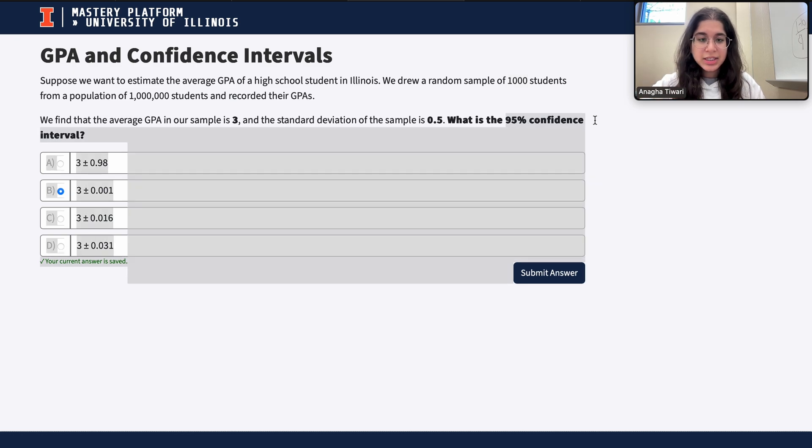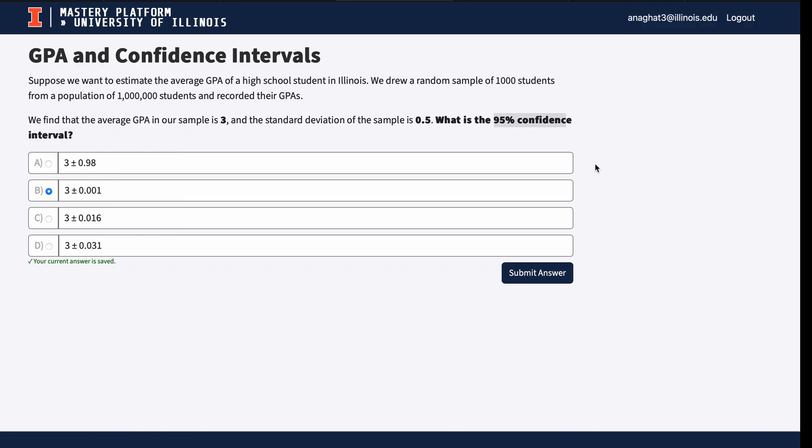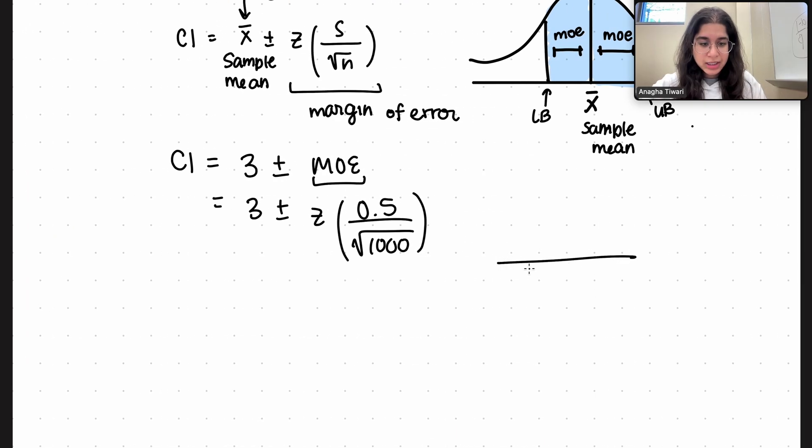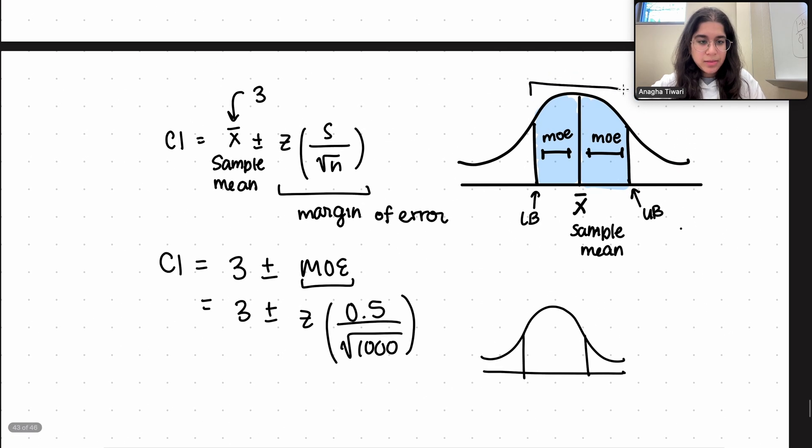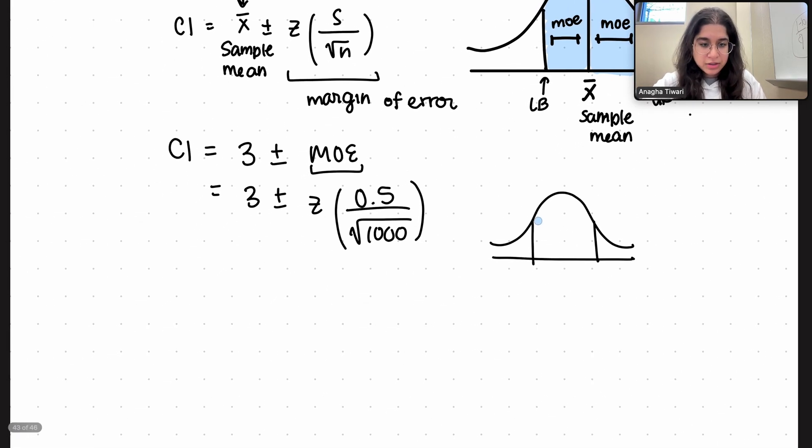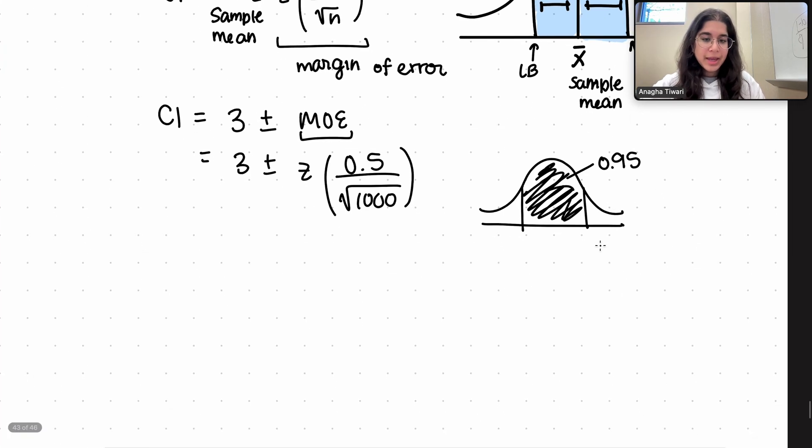Our confidence level is 95%. What does this mean? Well this means that if I were to draw out a nice looking bell curve, the area in the middle, this entire blue highlighted region here is going to be 95%, so this is going to be 0.95.